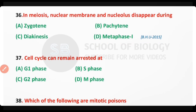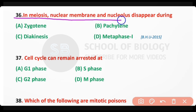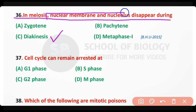Question number 36. In meiosis, the nuclear membrane and nucleolus disappear during: zygotene stage; pachytene stage; diakinesis; metaphase I. The correct answer is option A. During the diakinesis stage of prophase I, the nuclear membrane and nucleolus disappear.